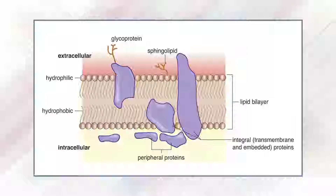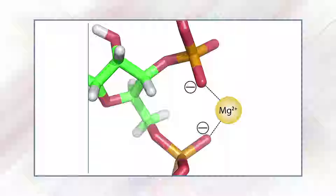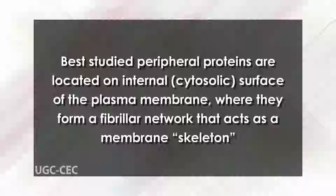Peripheral membrane proteins are located entirely outside the lipid bilayer on either the cytoplasmic or extracellular side, yet are associated with the surface of the membrane by non-covalent bonds. They are associated with the membrane by weak electrostatic bonds. The distinction between integral and peripheral proteins is blurred because many integral membrane proteins consist of several polypeptides, some penetrating the bilayer and others remaining on the periphery.